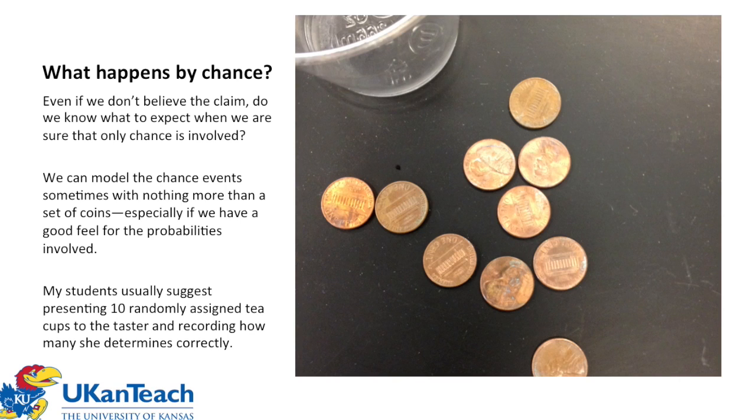So, how about this experiment first? Well, my students usually suggest let's give her 10 randomly assigned teacups. You know, there might be 10 with the milk first, I mean, but there may only be three or there may be five, and then present them to her randomly, and then she has a chance to choose. Now, with that chance to choose each one, she's got a 50-50 chance, a chance to get that correct. And let's see what would happen, though, if it were just by chance.